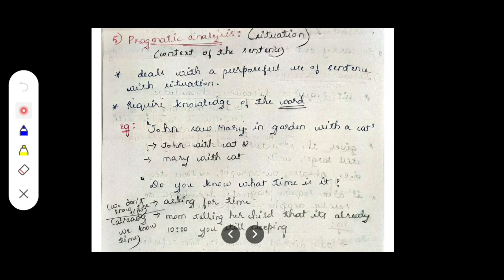As mentioned, pragmatic analysis is a situation-dependent level. It also requires knowledge about words — we have to know the situation of that context, meaning we must have some knowledge about the words. Consider an example so that it will be easy to understand.